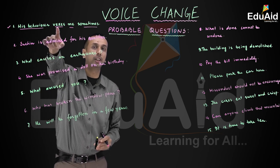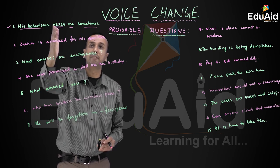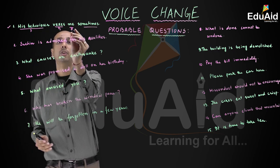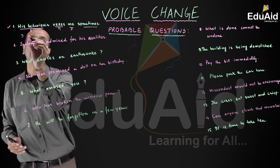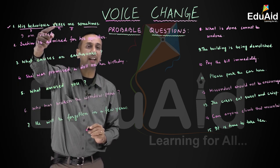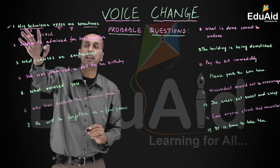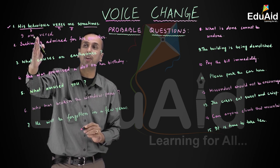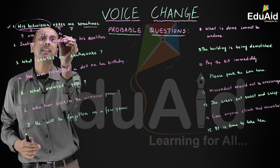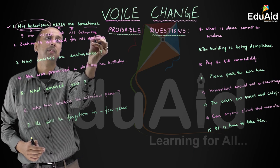In 'His behavior vexes me sometimes,' the subject is 'his behavior,' the verb 'vexes' is present tense, and 'me' is the object — which becomes 'I' as subject in passive. The tense is present, and the third form is 'vexed.' The preposition that 'vex' carries is 'at.' So the passive form is: 'I am vexed at his behavior sometimes.'